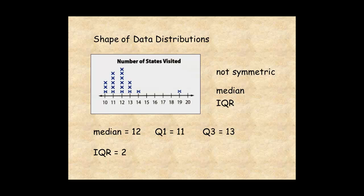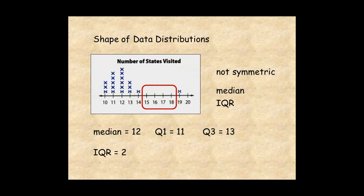In addition, there's a cluster of data between 10 and 13 states. There's a gap between 15 and 18. There's a peak at 12 states. And an outlier at 19 states.